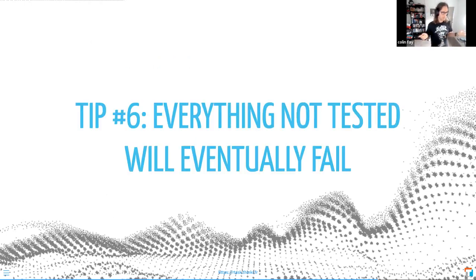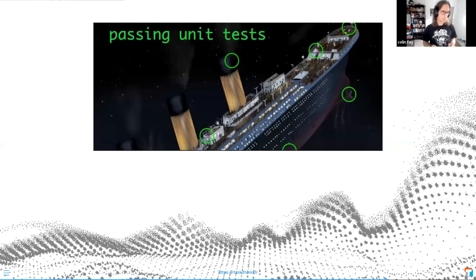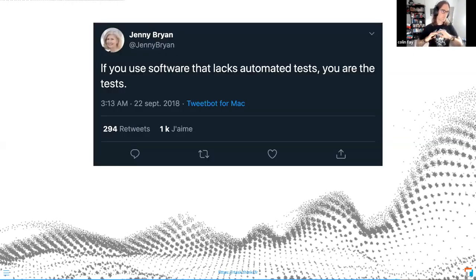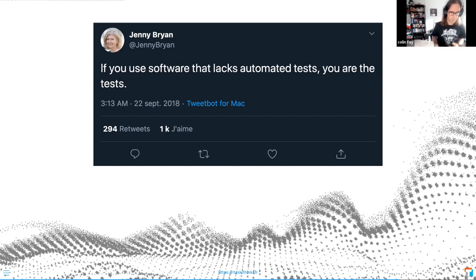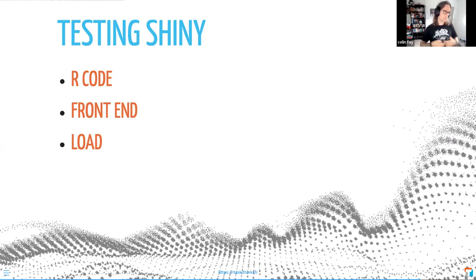My last tip: everything not tested will eventually fail. If you don't have automated tests, you will end up with users being your unit tests — and that's not what you want. You don't want your users to discover the bugs; you want to catch the bugs before they go to production. That's why it's very important to always test everything. You have to test the R code, of course; you have to test your front end; and you have to test the load.